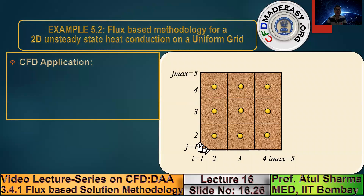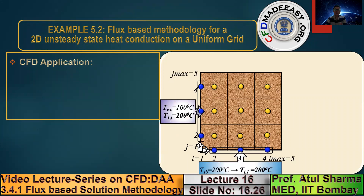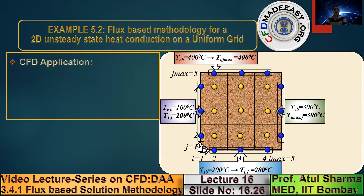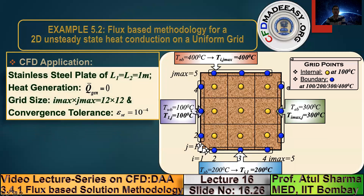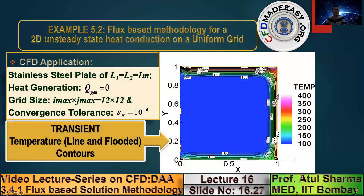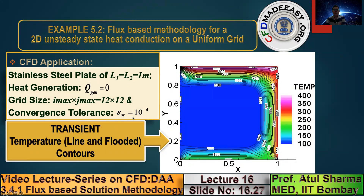The 2D example problem: left wall is 100°C, bottom wall is 200°C, right wall is 300°C, and top wall is 400°C. The initial condition is 100°C throughout, with respective boundaries at 100, 200, 300, and 400°C. The material is a stainless steel square plate of dimension 1 meter with no heat generation. A grid size of 12×12 is used with a steady-state convergence criterion of 10^-4. An animation corresponding to this problem will be shown.